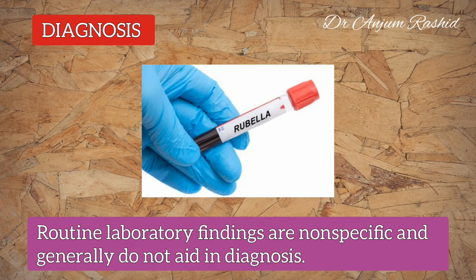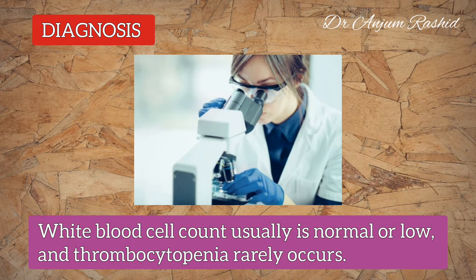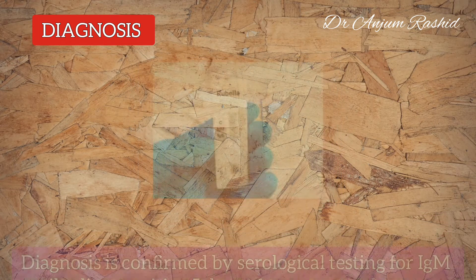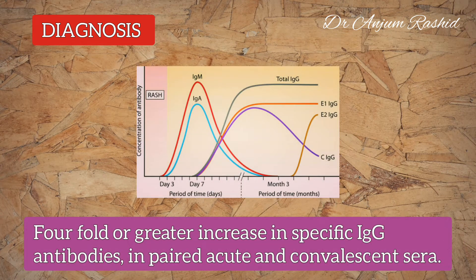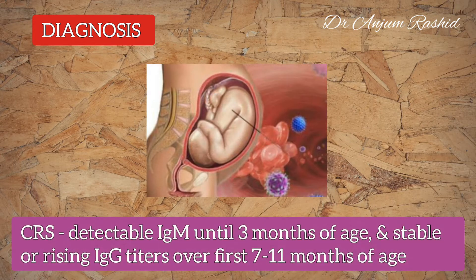Regarding diagnosis, routine laboratory findings are non-specific and generally do not aid in diagnosis. The WBC count is usually normal or low, and thrombocytopenia rarely occurs. Diagnosis is confirmed by serological testing for IgM antibodies, which are typically positive five days after symptom onset.